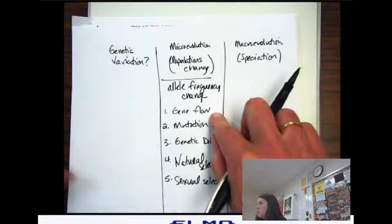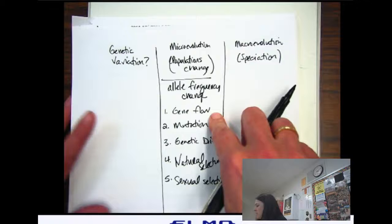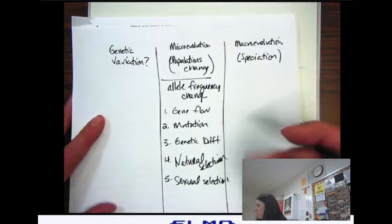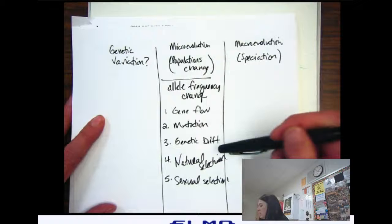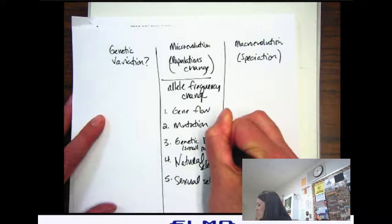So if you have someone new come into a population, they bring in brand new alleles and they might shift the percentages of alleles in a population. Or if someone leaves the population, they leave with their alleles and that might shift the percentages. Mutation gives you a brand new allele, so that's going to change the allele frequency. Do you guys remember what genetic drift is? And it happens in small populations. Random changes in small populations.